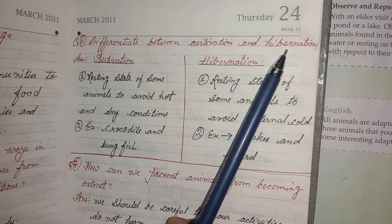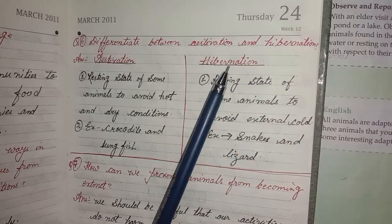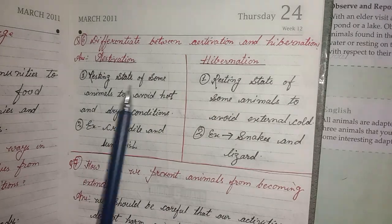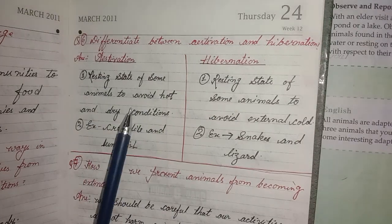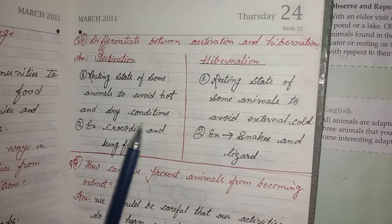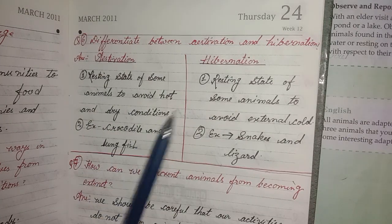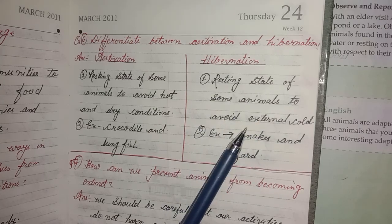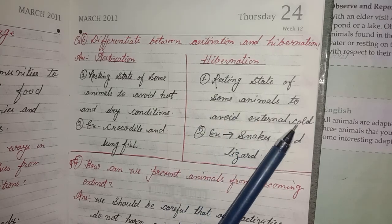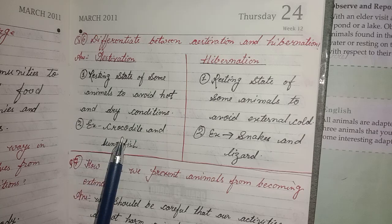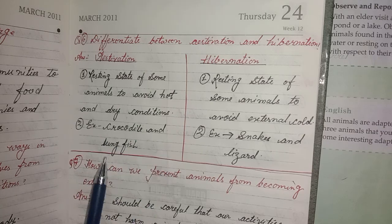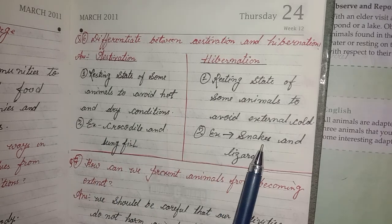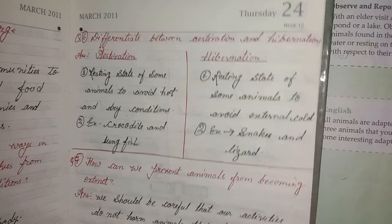Sixth question: differentiate between estivation and hibernation. Estivation: a resting state of some animals to avoid hot and dry conditions; example: crocodile and lungfish. Hibernation: a resting state of some animals to avoid extreme cold; example: snakes and lizards.